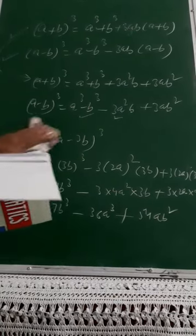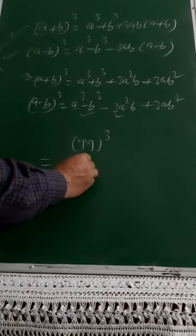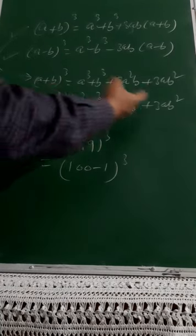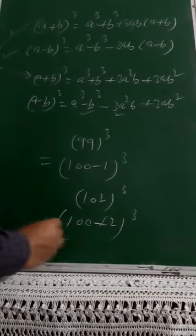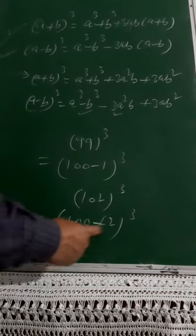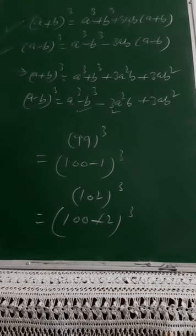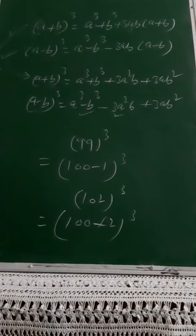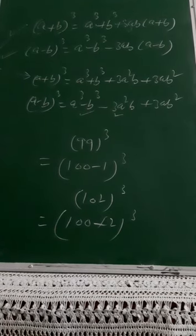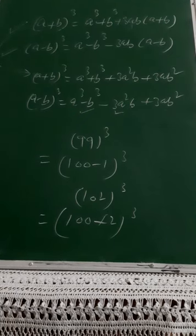Similarly you can work out the plus version. In question 7, like you did in class 8 with (a+b)² and (a-b)², here you use cube identities. For example, 99³ = (100-1)³ using (a-b)³, and 102³ = (100+2)³ using (a+b)³ with a = 100, b = 2. Apply these two identities and check the answers. Remaining identities will be shared in the next class. Thank you.